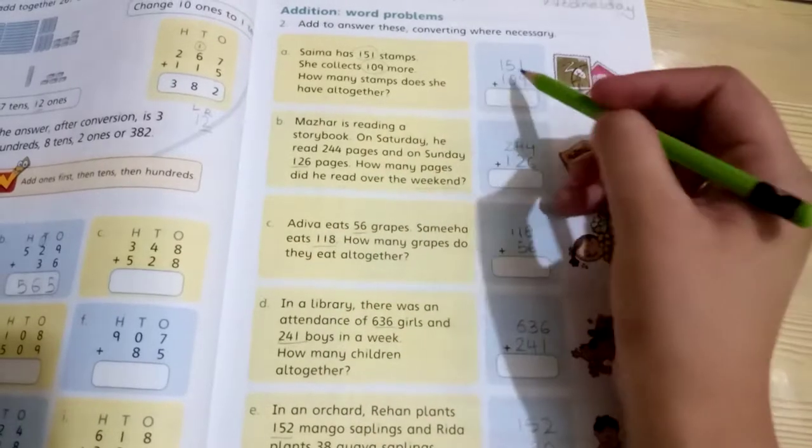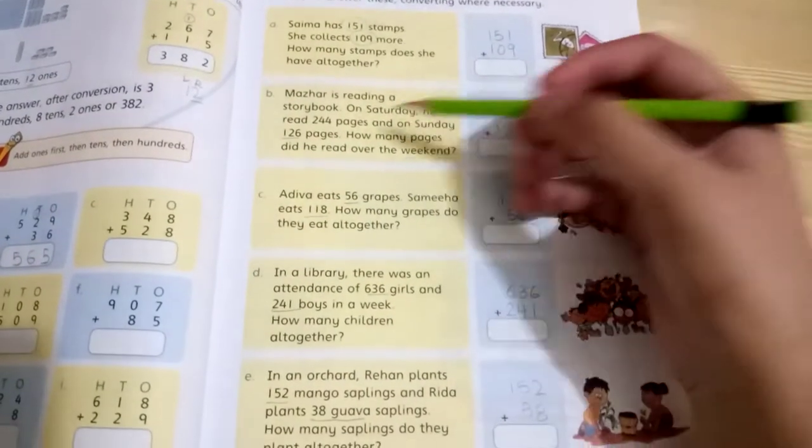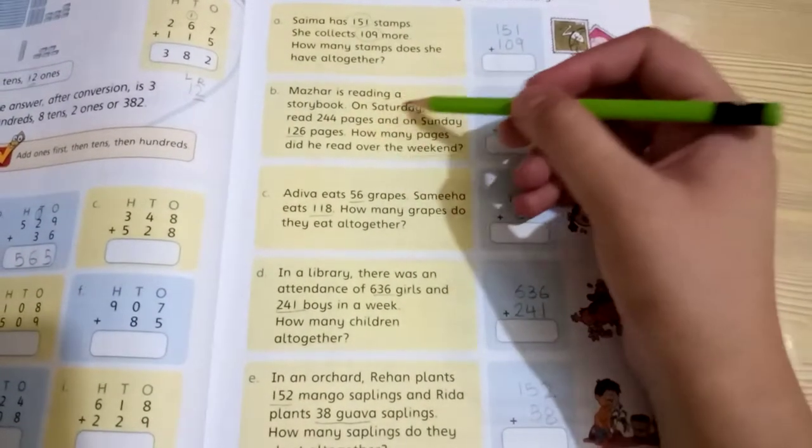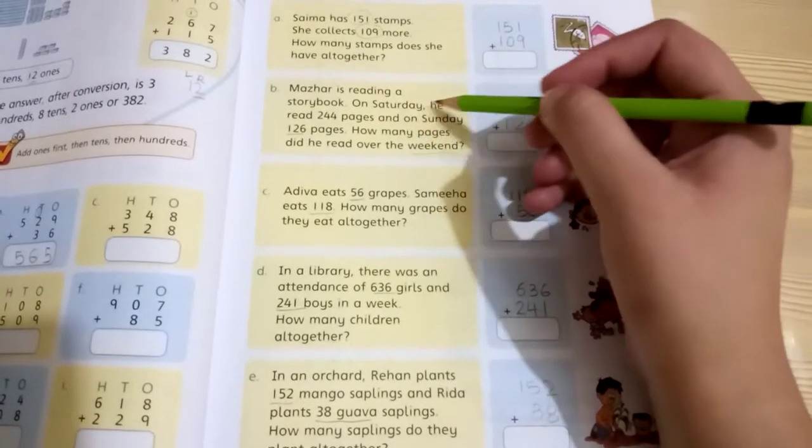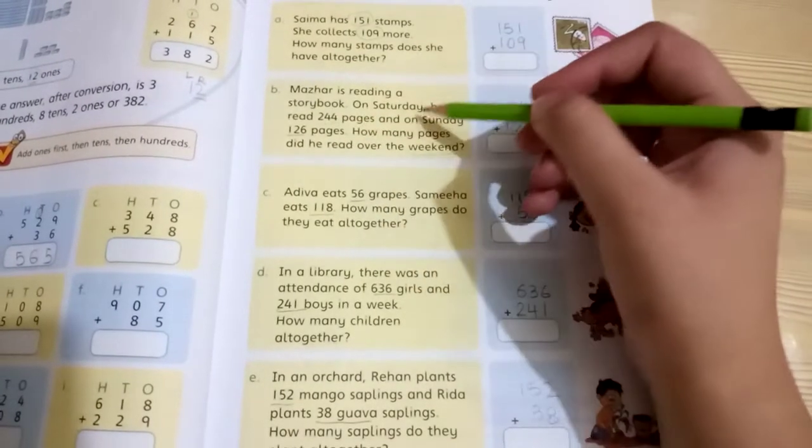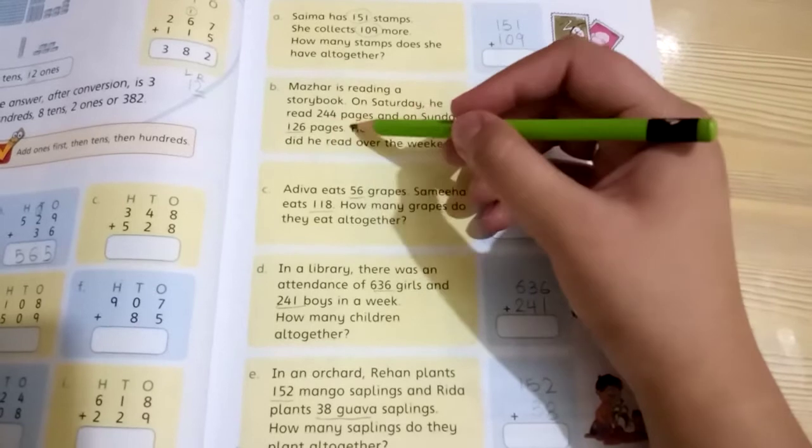Mazar is reading a storybook. On Saturday, he read 244 pages, and on Sunday, 126 pages. How many total pages did he read on the weekend? Add 244 and 126 to get the answer.